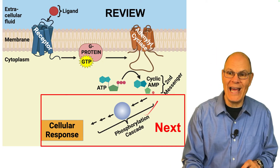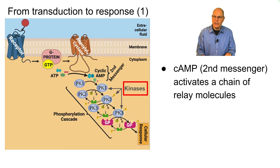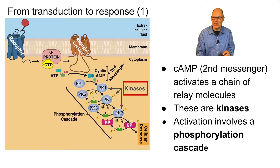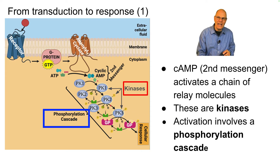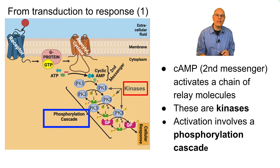What we're going to look at next is the cellular response. The second messenger, cyclic AMP, is going to activate a chain of relay molecules called kinases. This activation involves one kinase activating the next kinase, activating the next. I've only put three in this chain, but there can be many more, and that's called a phosphorylation cascade.